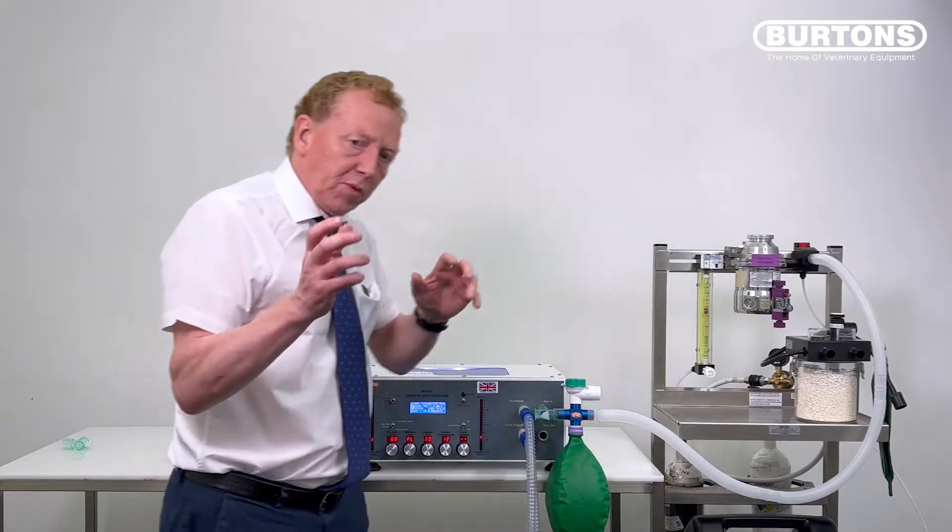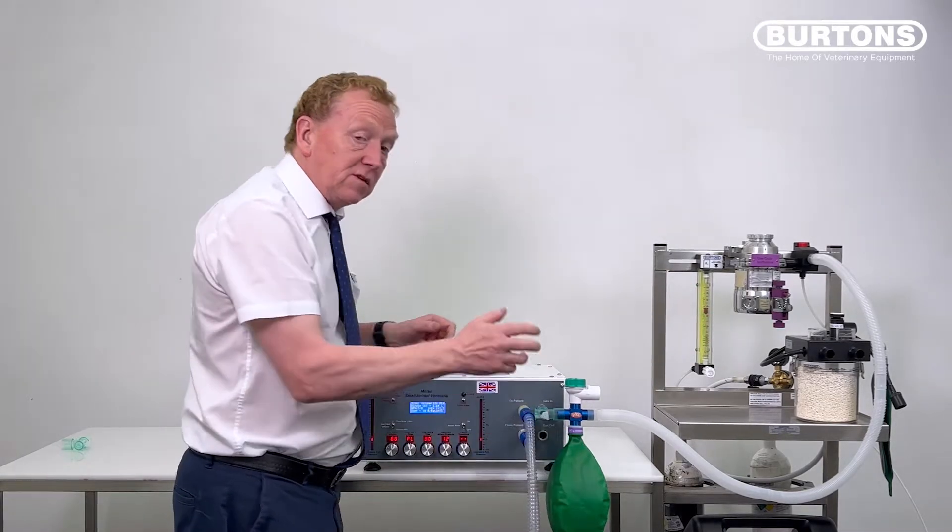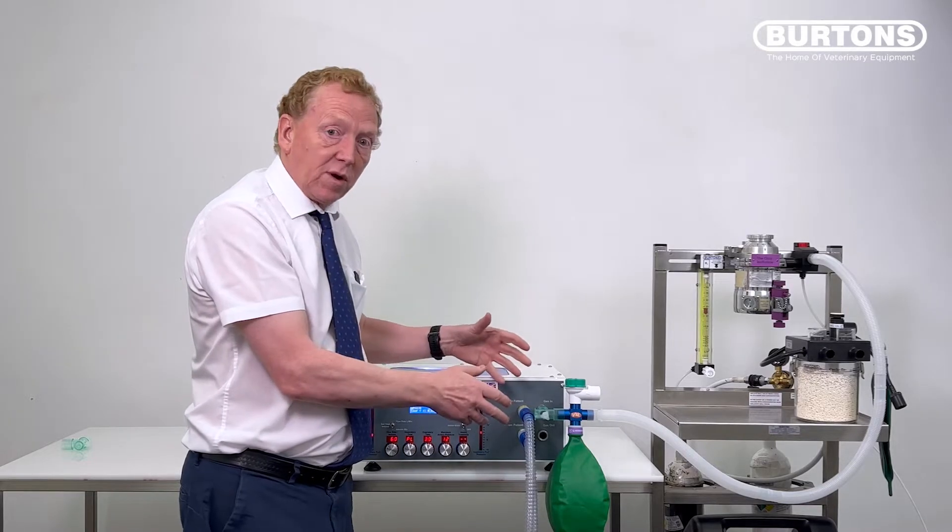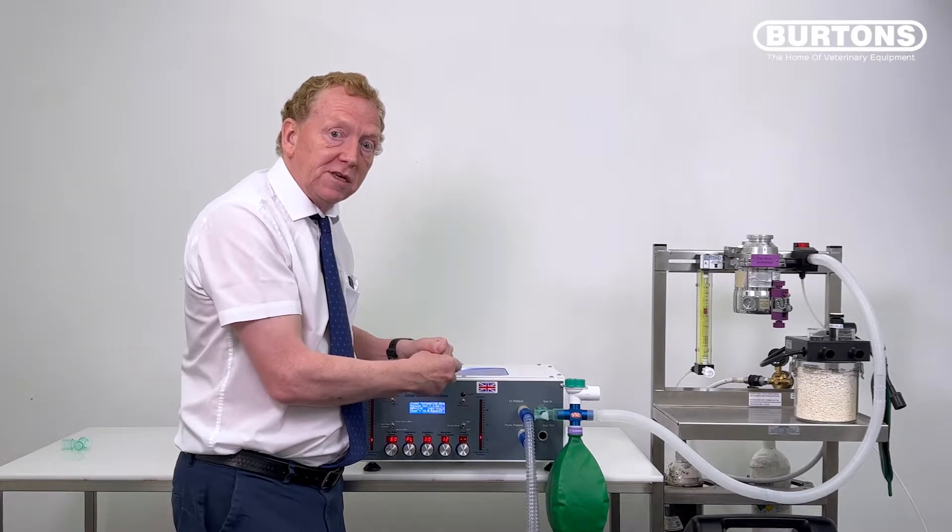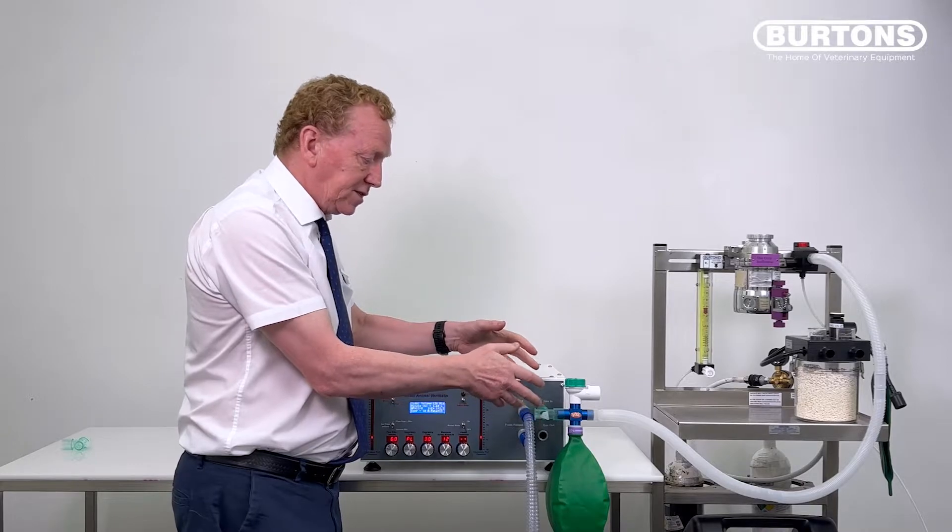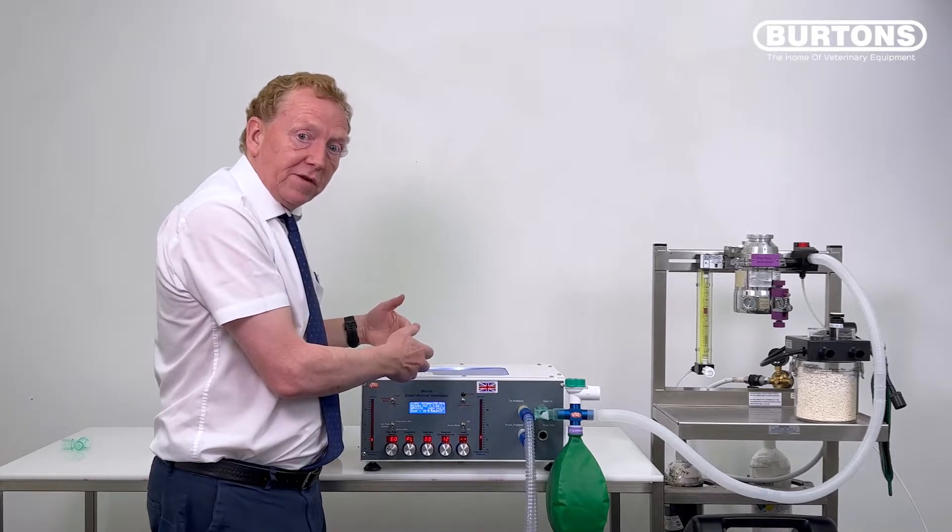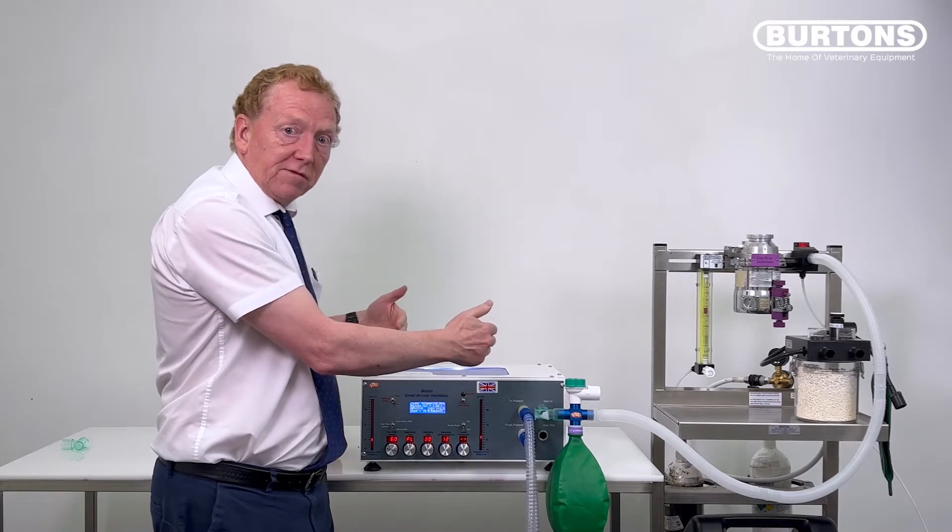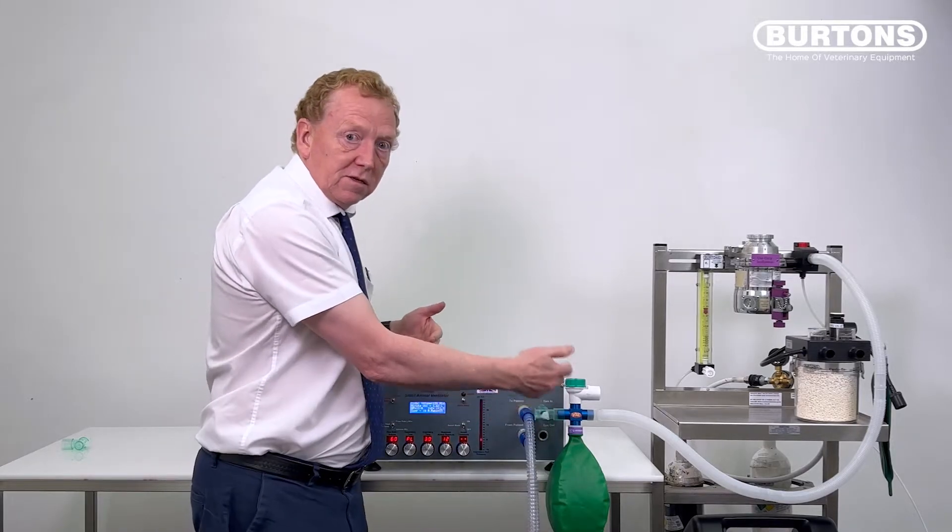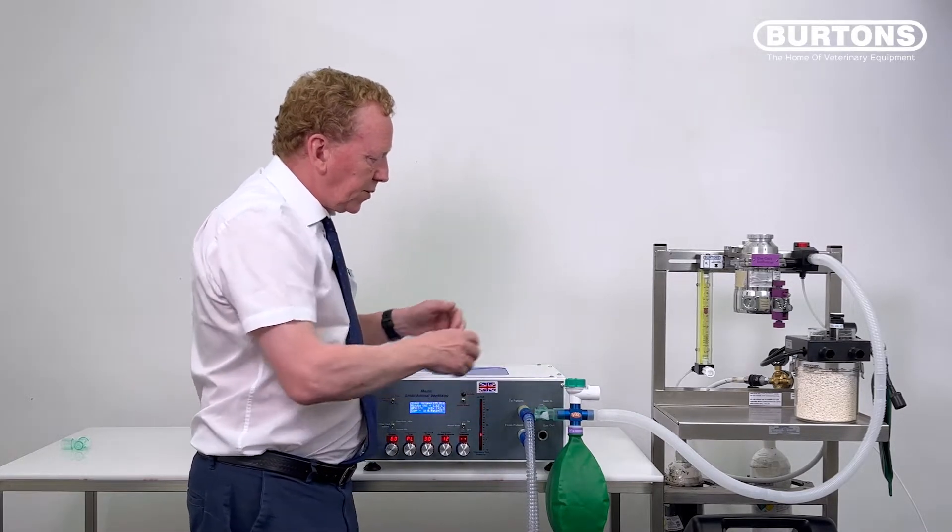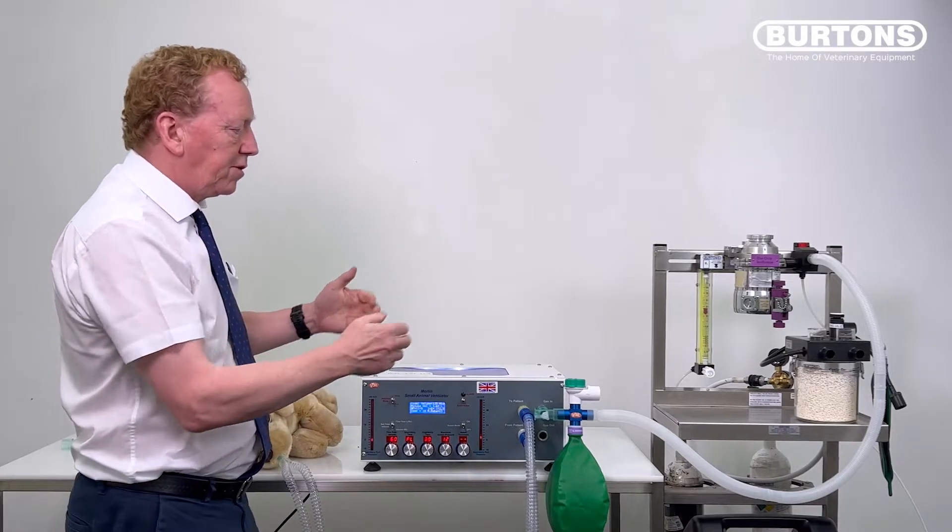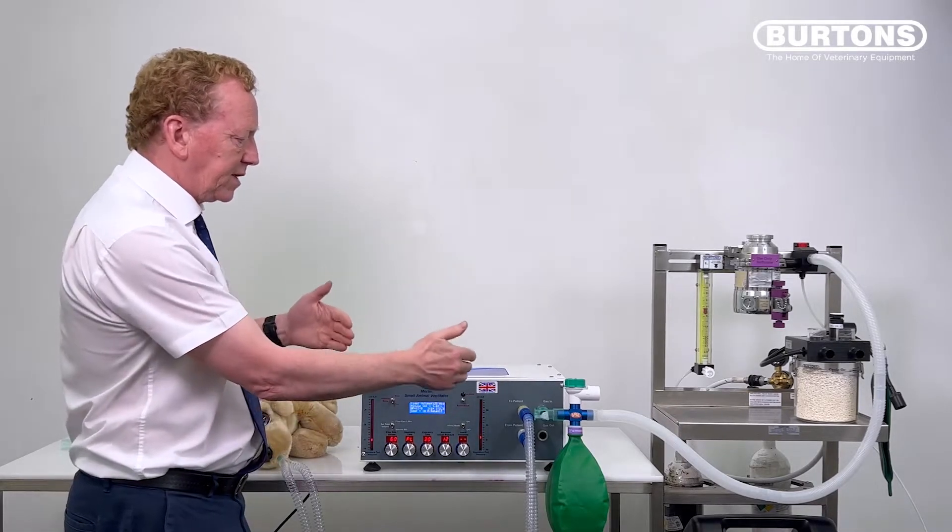So one important point to note is that this reservoir bag is not a patient reservoir bag. It's a fresh gas flow reservoir bag. So it doesn't relate to the patient size, it just relates to how much it needs to fill to allow Merlin to fill up again. And because Merlin is just under a litre, one litre, two litre bag is fine. So this solves the problem for us, for a non-rebreathing circuit.